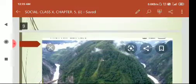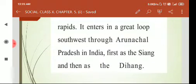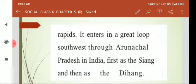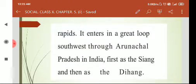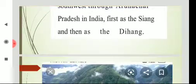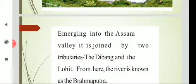First it enters into Arunachal Pradesh, where it is known as Tsang; after some distance it is called Dihang. Then it enters into Assam where it is first called Sedong. When the two tributaries Dibang and Lohit join with it, the combined stream is then known as Brahmaputra.